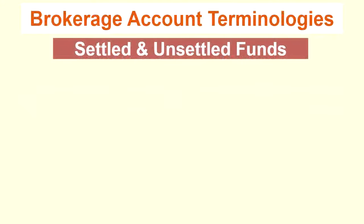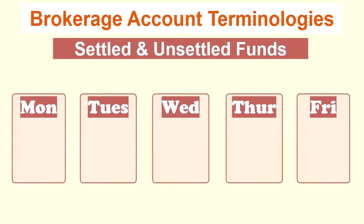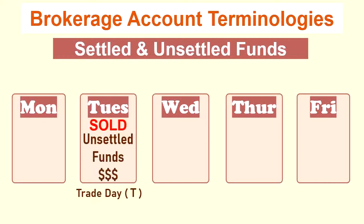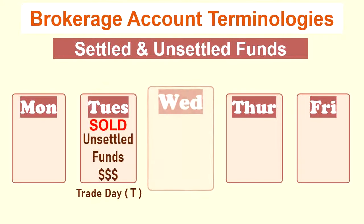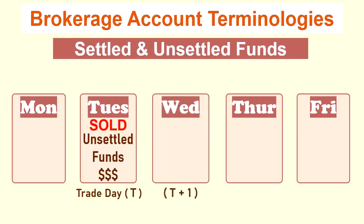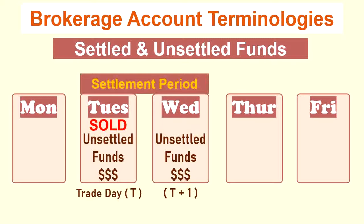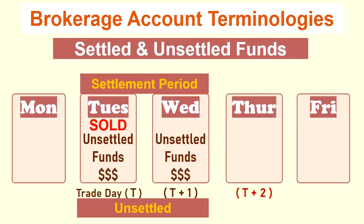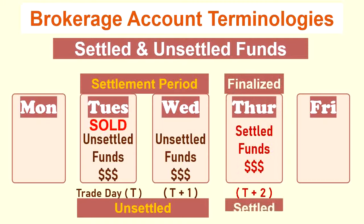Let's look at an example of settled and unsettled cash across 5 days in the trading week, assuming none of these days are holidays. Let's say you sold a stock on Tuesday — that'll be the trade day, T day or the transaction day. From the point of sale on Tuesday, the funds would be unsettled. Also on Wednesday, T plus 1 day, the funds will continue to be unsettled. On Thursday, T plus 2 day, the transaction would be finalized and the funds will be considered settled.